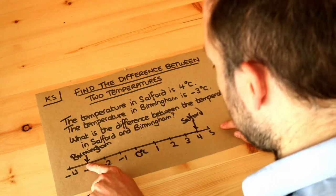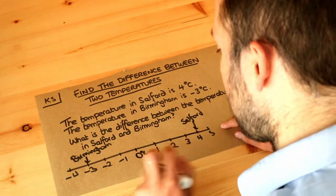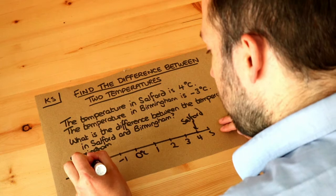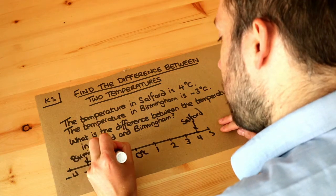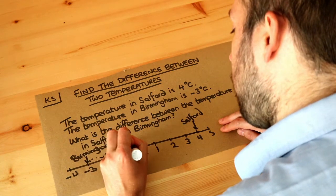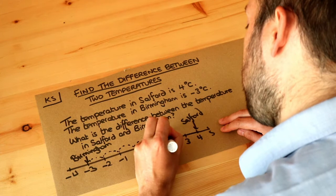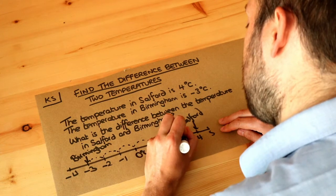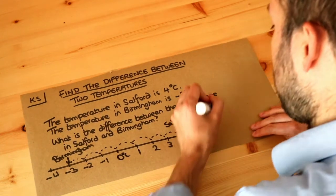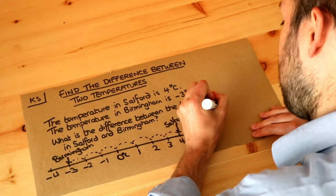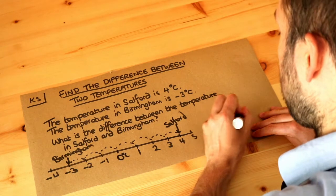Let's look at the difference between here and here. We've got a difference of one, two, three, four, five, six, seven. So the difference in the temperatures is seven degrees.